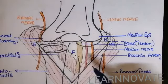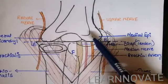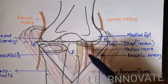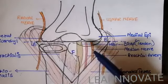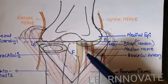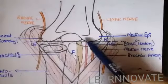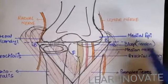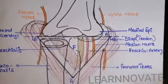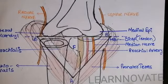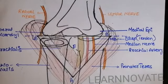We know that the elbow joint is formed between the humerus and the radius and the ulna, which we have discussed in a separate video of elbow joint. Anterior to the joint, some of the muscles and the nerves produce a triangular shaped depression in between the forearm and the arm that we call as the cubital fossa.